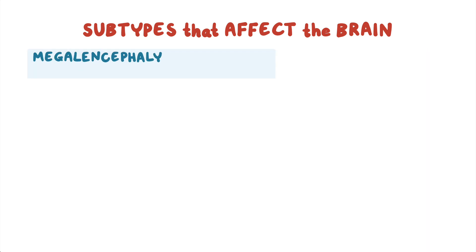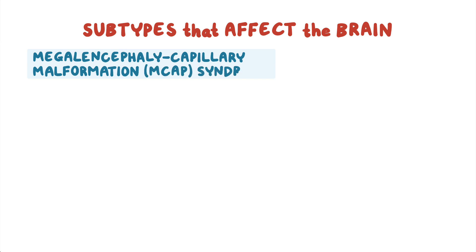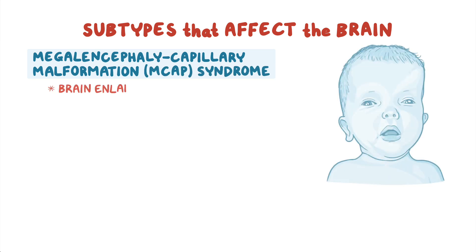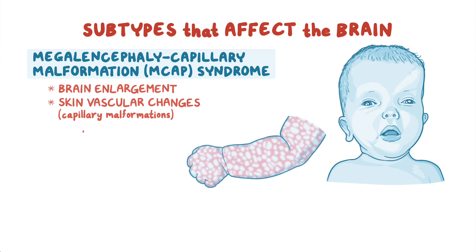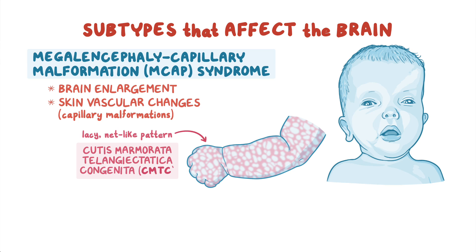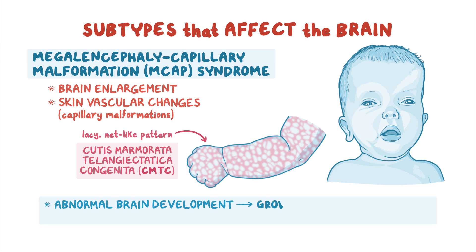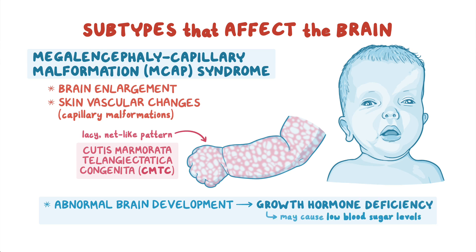And megalencephaly capillary malformation, or MCAP, syndrome involves brain enlargement in conjunction with skin vascular changes, usually capillary malformations, which may take on a particular lacy net-like pattern called cutis marmorata telangiectatica congenita, or CMTC. Abnormal brain development can lead to growth hormone deficiency, which may cause low blood sugar levels.